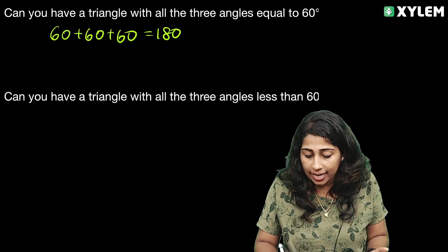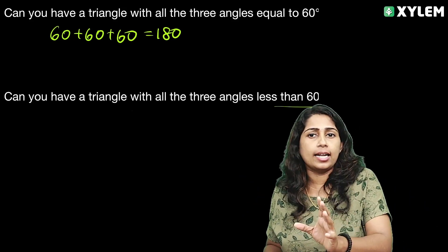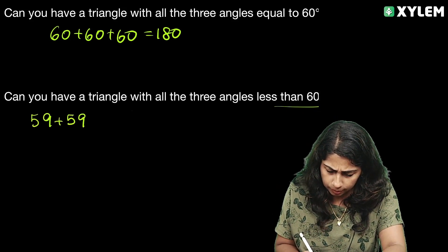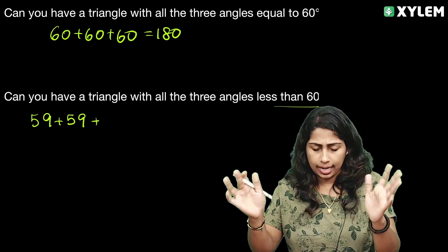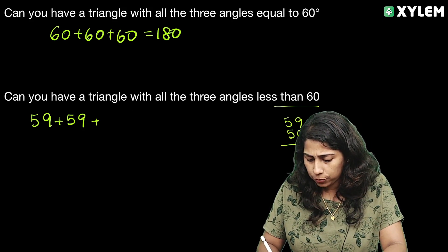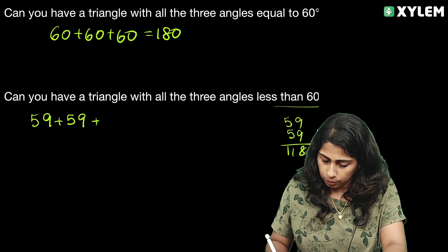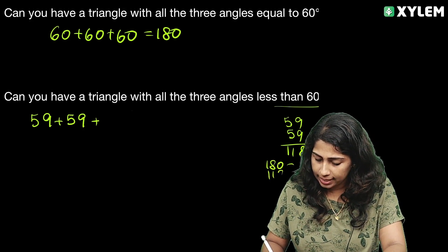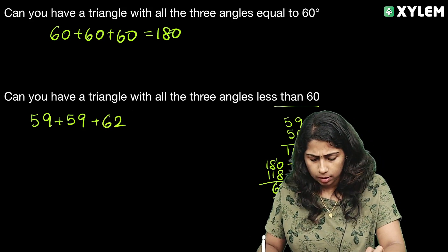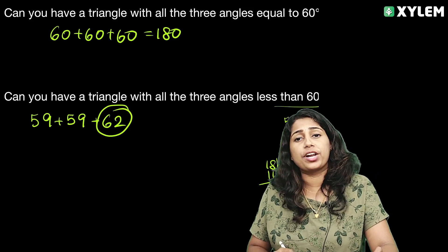Can you have a triangle with all three angles less than 60 degrees? Let's check. Taking 59 degrees as the maximum value less than 60: 59 plus 59 plus 59 equals 177, which is less than 180. The remaining angle would need to be greater than 60 to satisfy the angle sum. So having all three angles less than 60 is not possible.